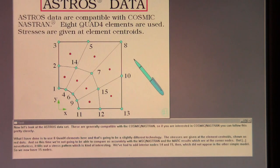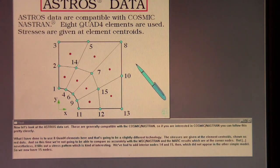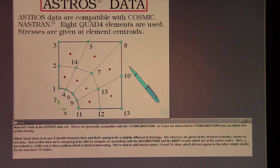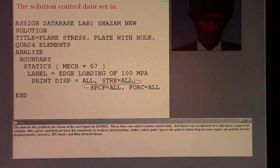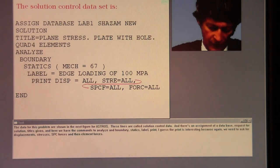Now let's look at the Astros data set. These are generally compatible with the Cosmic Nastran. So if you are interested in Cosmic Nastran, you can follow this pretty closely. What I've done is to use eight quad four elements here. And that's going to be a slightly different technology. The stresses are given at the element centroids shown as red dots. And so this time we're not going to be able to compare as accurately with the MSC Nastran and the MARC results, which are at the corner nodes. But nevertheless, it fills out a stress pattern, which is kind of interesting. We've had to add interior nodes 14 and 15 then, which didn't appear in the other simple model. So we now have 15 nodes.